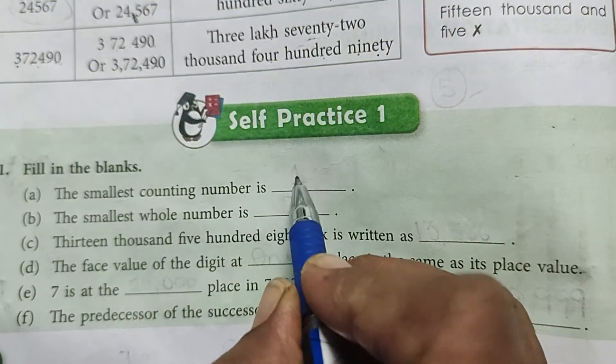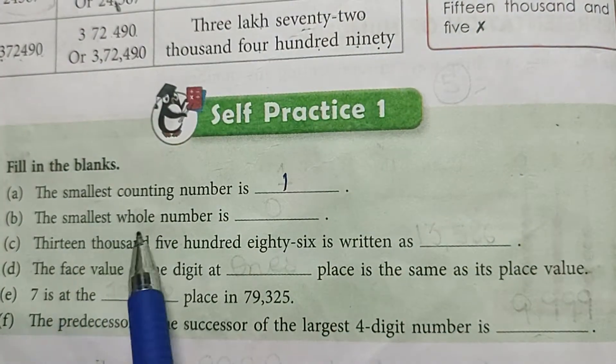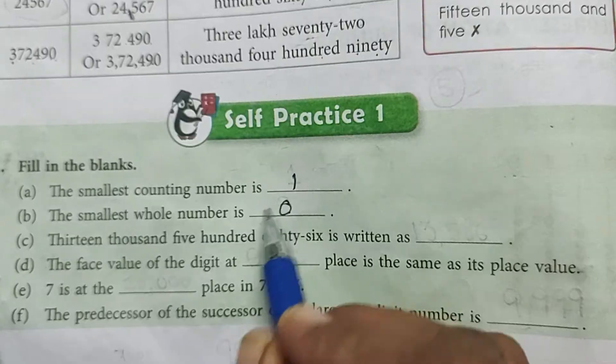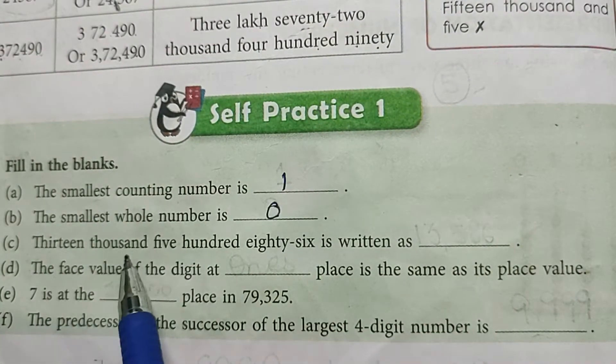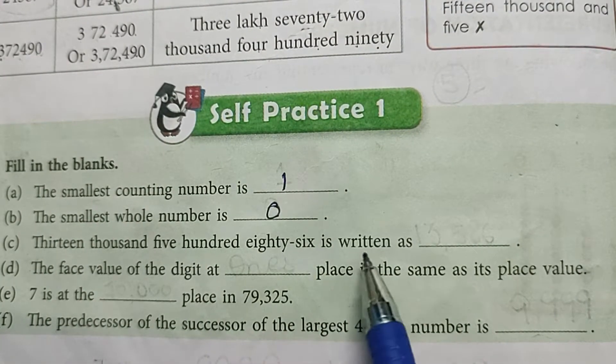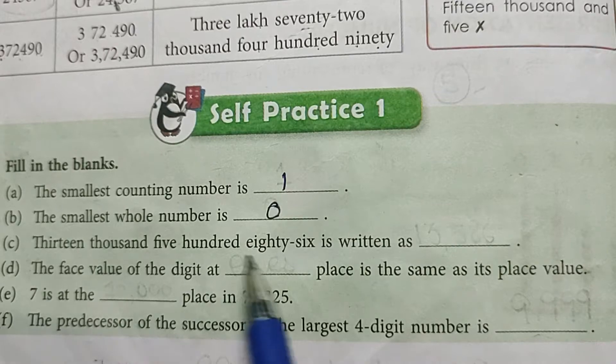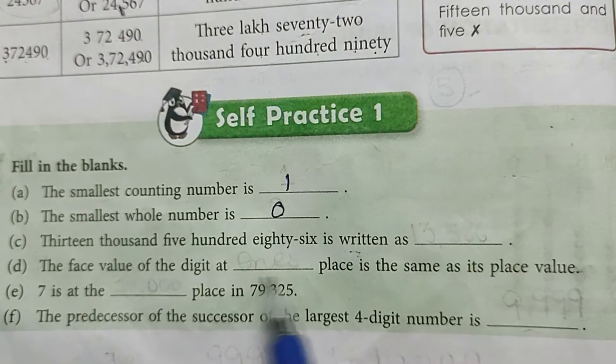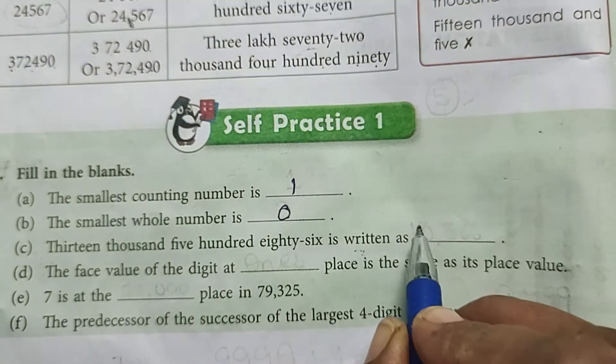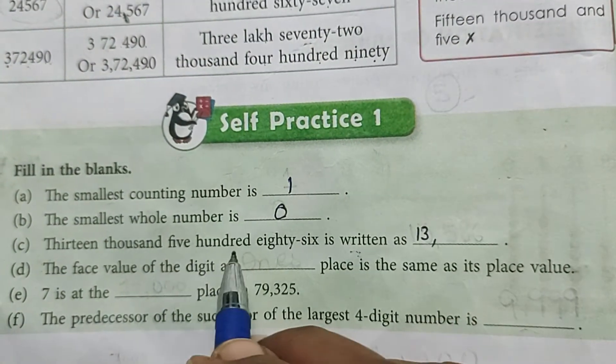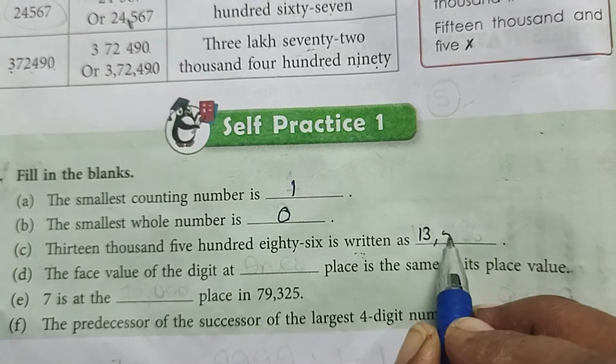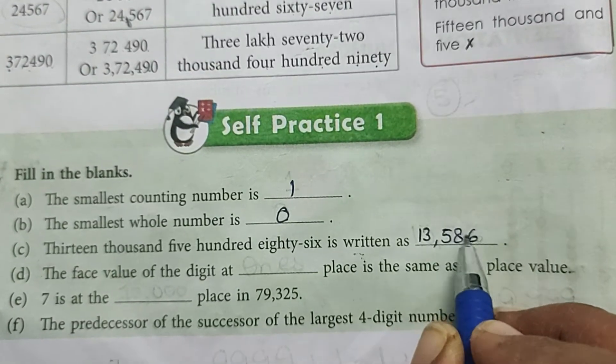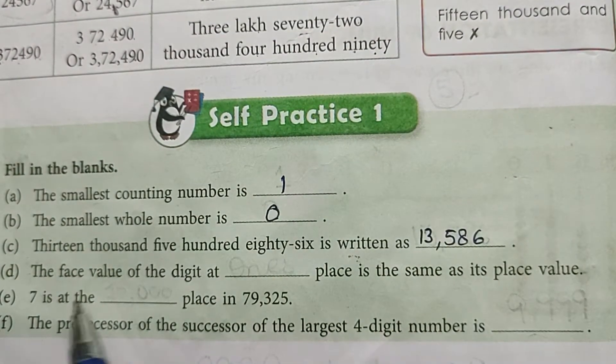The smallest counting number is one. The smallest whole number is zero. Thirteen thousand five hundred eighty-six is written in words as... We have a number in numerals, so thirteen thousand five hundred eighty-six.